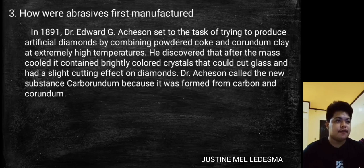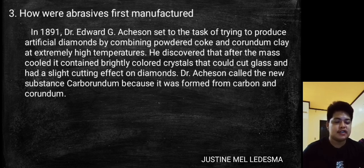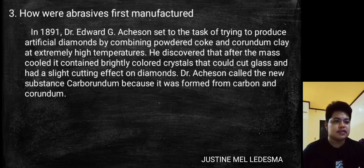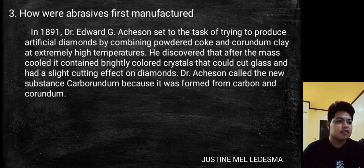In 1891, Dr. Edward G. Acheson set the task of producing artificial diamonds by combining powdered coke and corundum clay at extremely high temperatures. He discovered that the mass contained crystals that could cut glass and had a slight cutting effect on diamonds. He called the new substance Carborundum because it was formed by carbon and corundum.